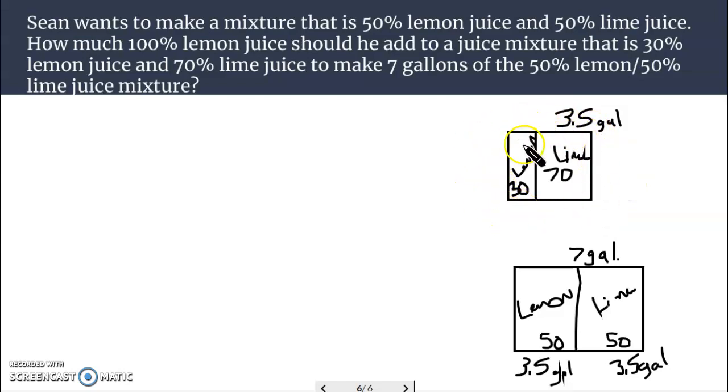3.5 gallons of the lime, that equaled 0.7 of whatever was there. All right. So that this, you know, 3.5 gallons of lime was 70% of what total mixture. Okay. So we can solve this by dividing both sides by 0.7 and we get Y equals 5.